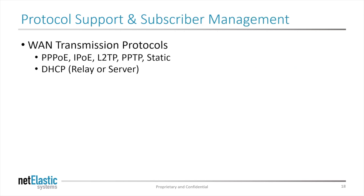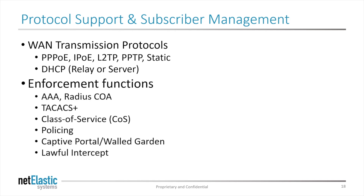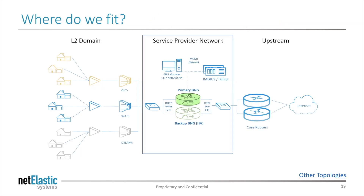The Netelastic BNG supports all the protocols and subscriber management tools broadband service providers need. This includes dual-stack IPv4 and IPv6, carrier network protocols as discussed before, and subscriber management enforcement functions, as well as 6 million CGNAT sessions. A BNG typically sits behind copper, RF, or glass access networks, and moves traffic from the LAN to the WAN while providing subscriber management, congestion avoidance, and multi-WAN routing. It typically interacts with the BSP's billing system through a RADIUS database, but it can also store subscriber data locally.